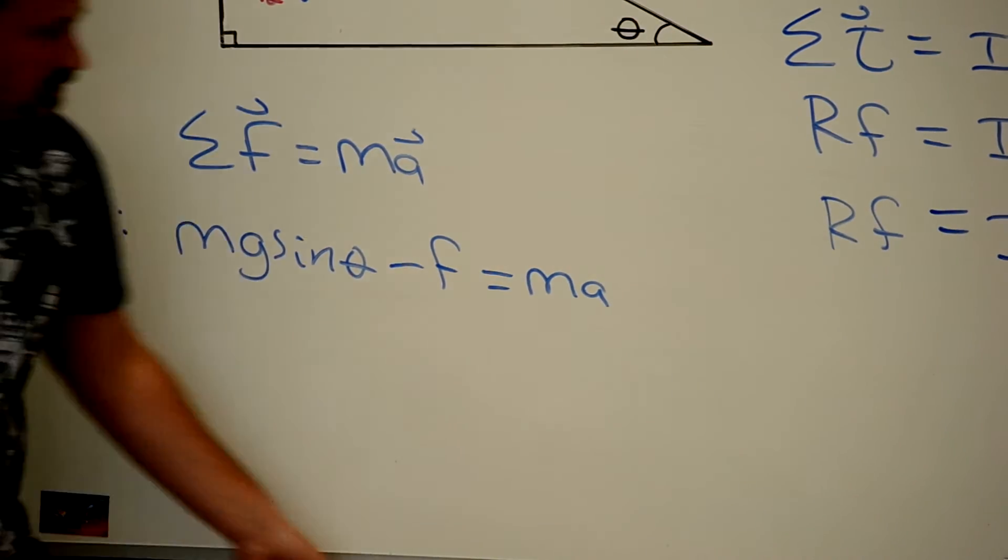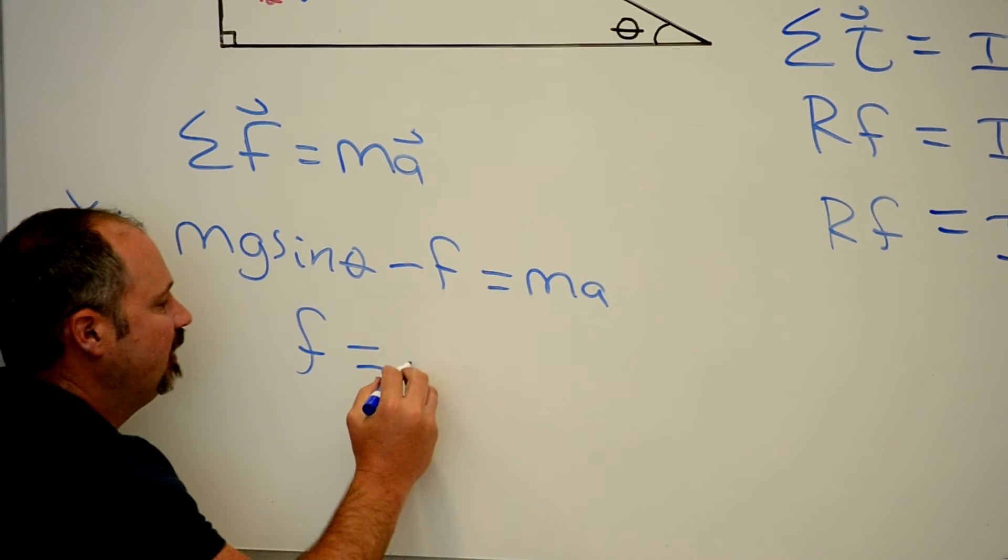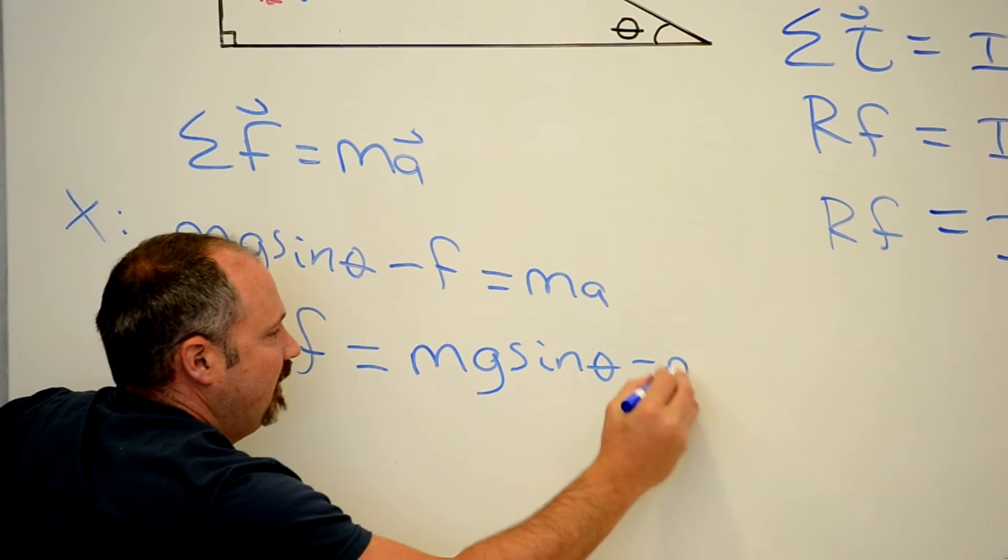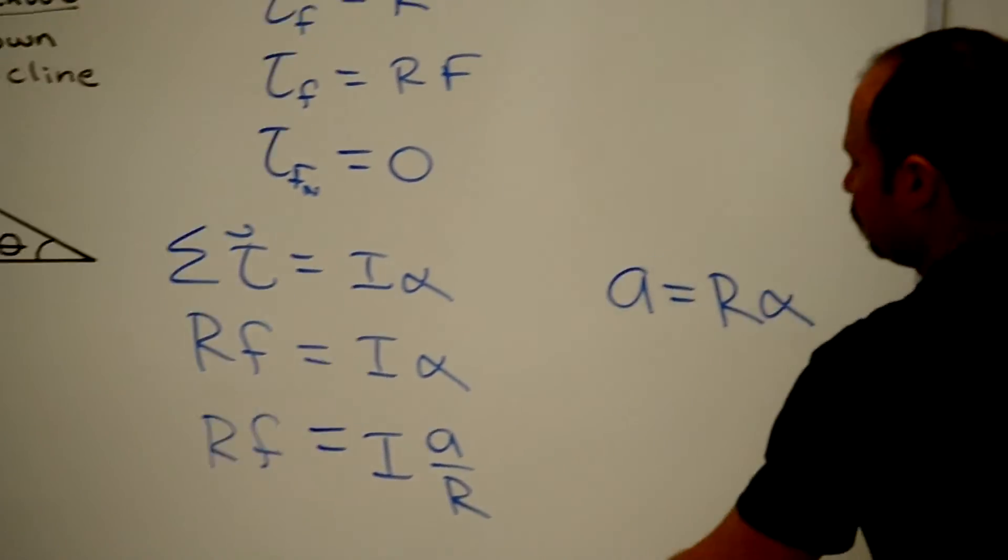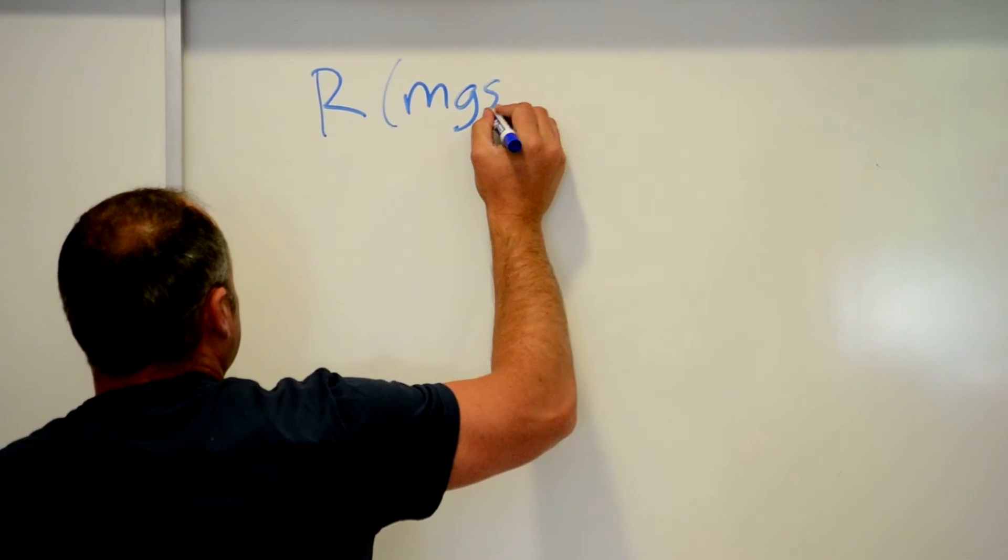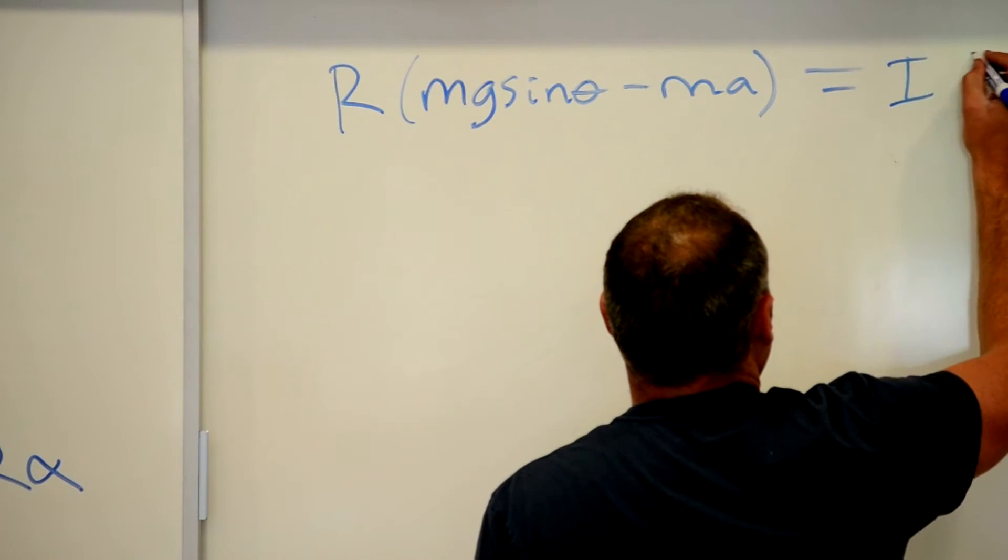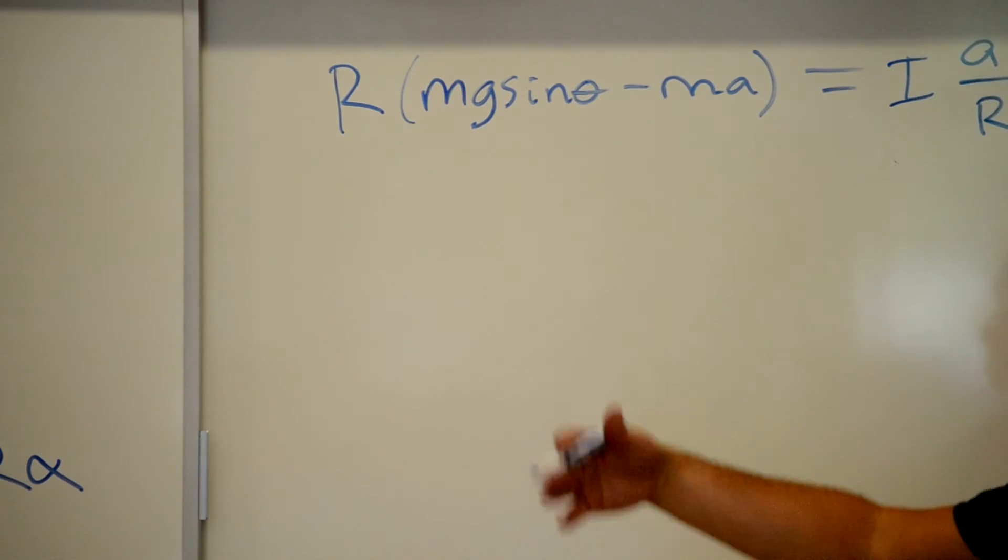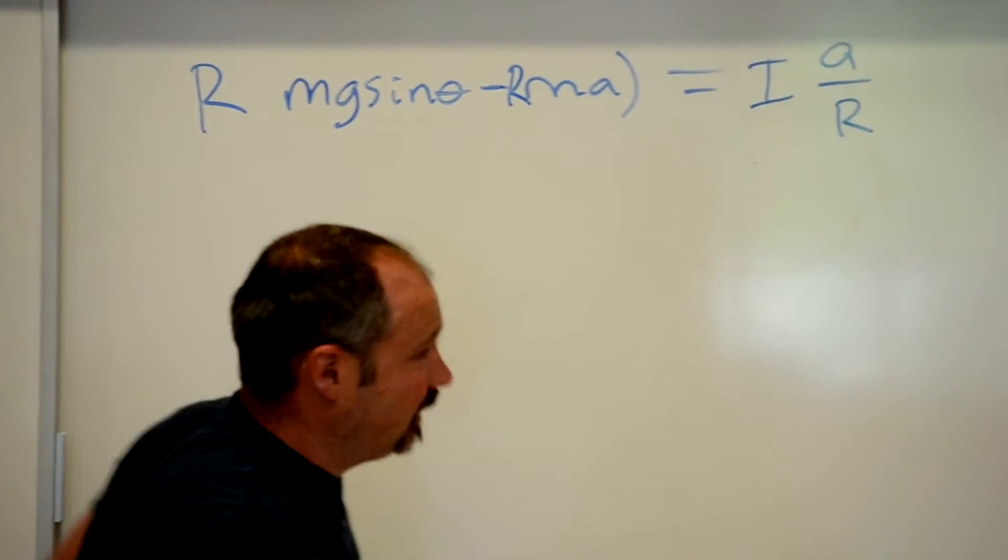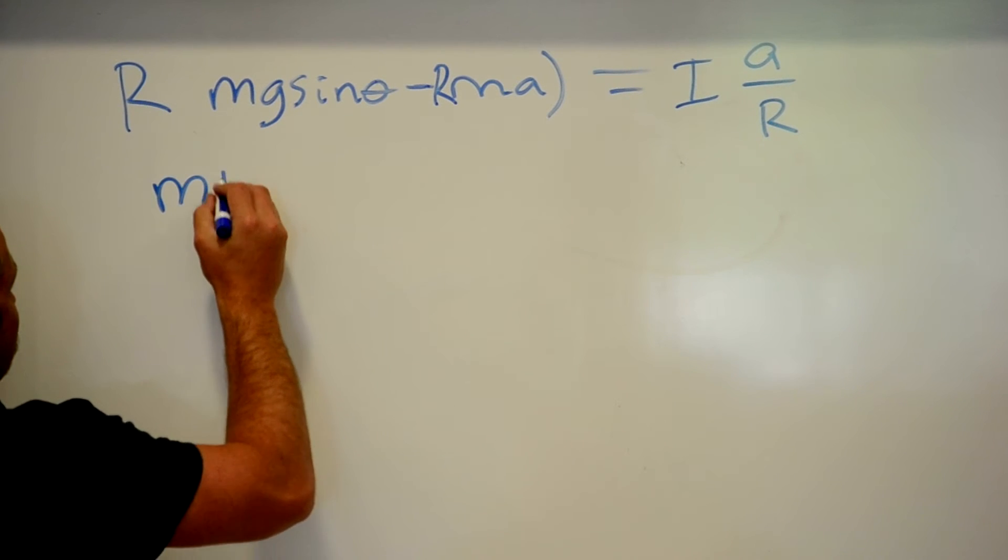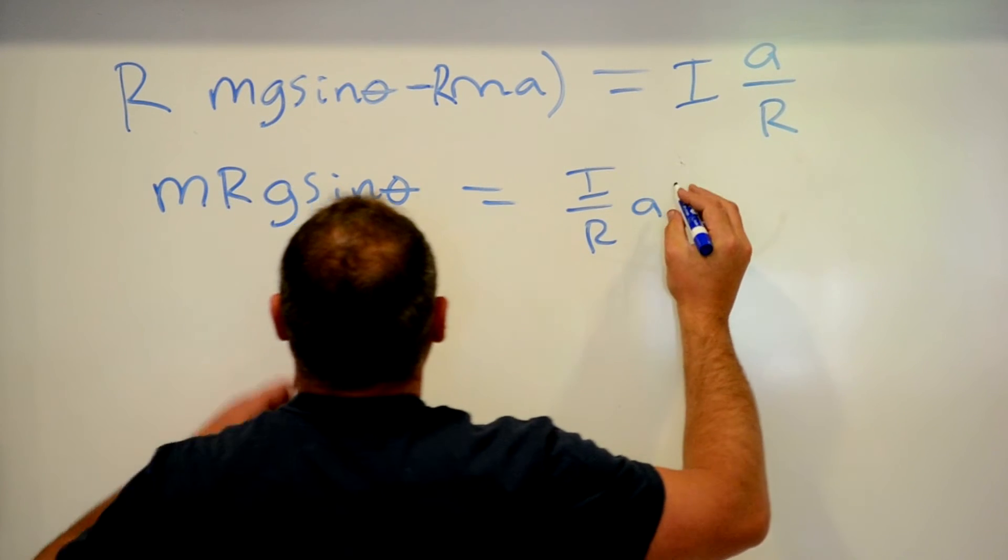Now we can isolate for the force of friction, plug that in. So force of friction, if I bring this guy over there and then the ma over here, I get mg sine theta minus ma. Let's plug in for friction. And so then I would get r times the force of friction, which is mg sine theta minus ma. And all that equals the moment of inertia times acceleration over r. So let's multiply through by r. And now I'll bring the r times ma over to this side so I can isolate for acceleration.